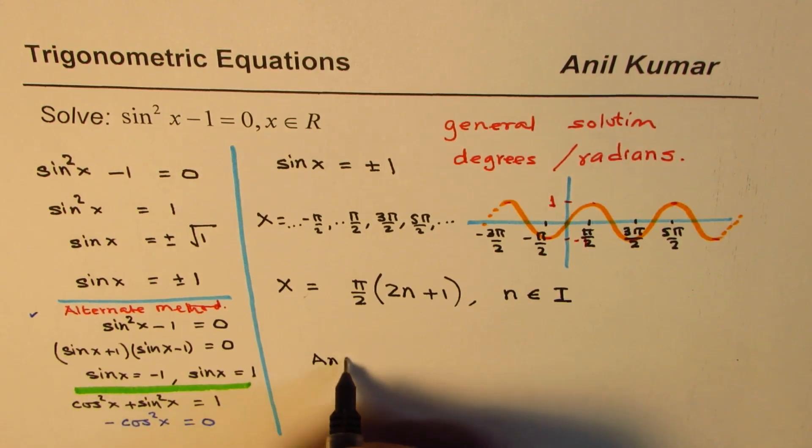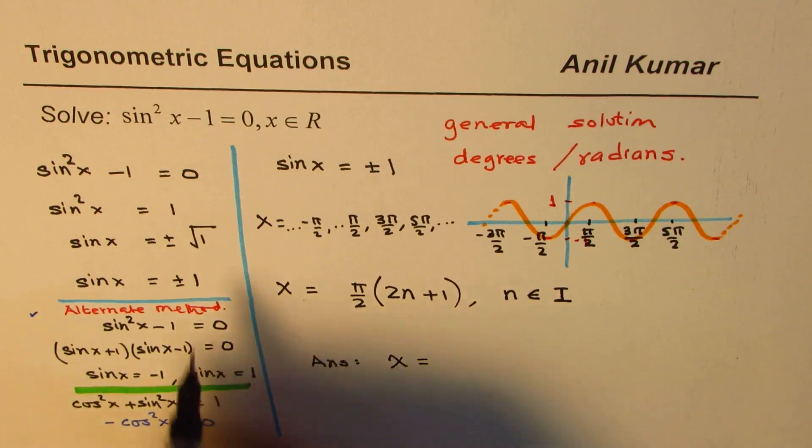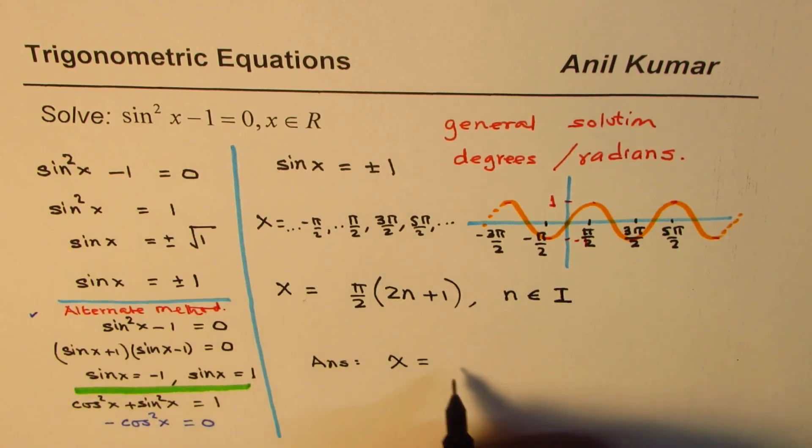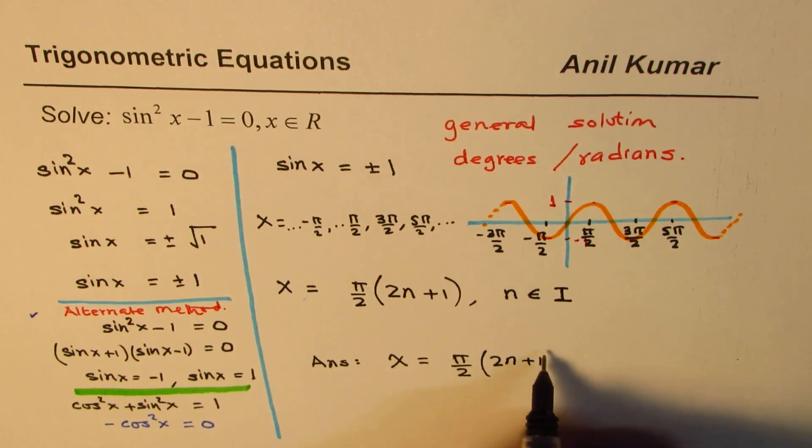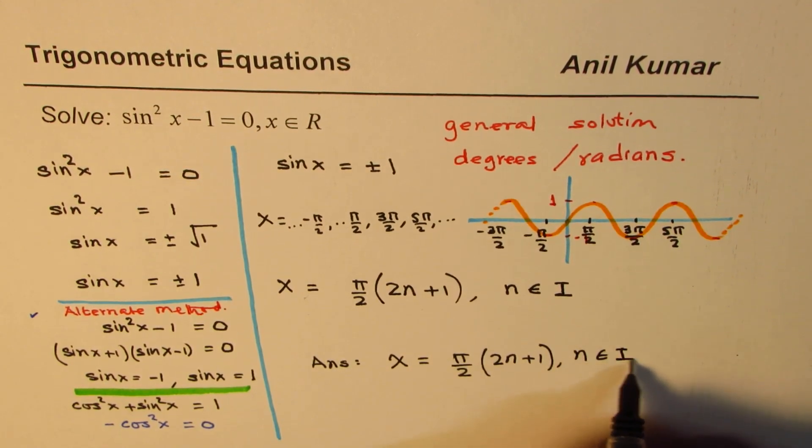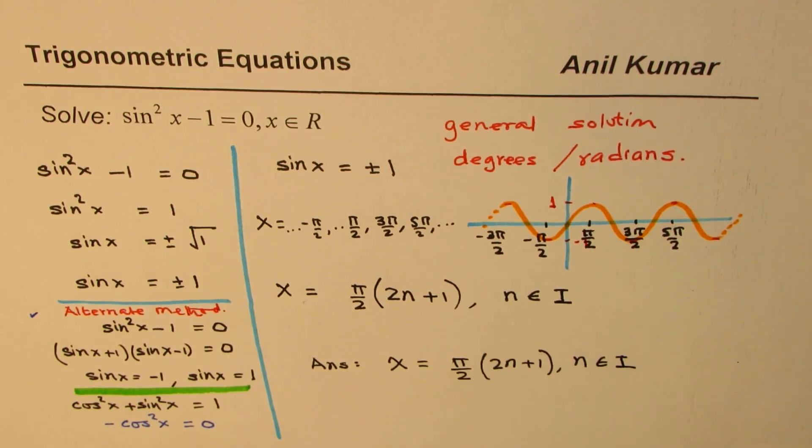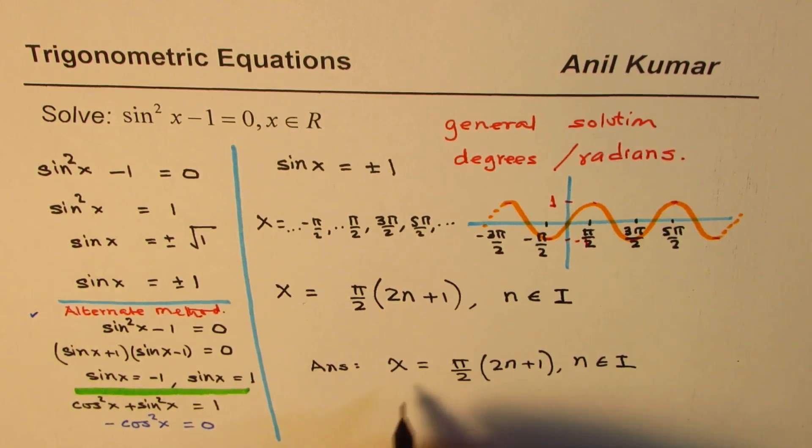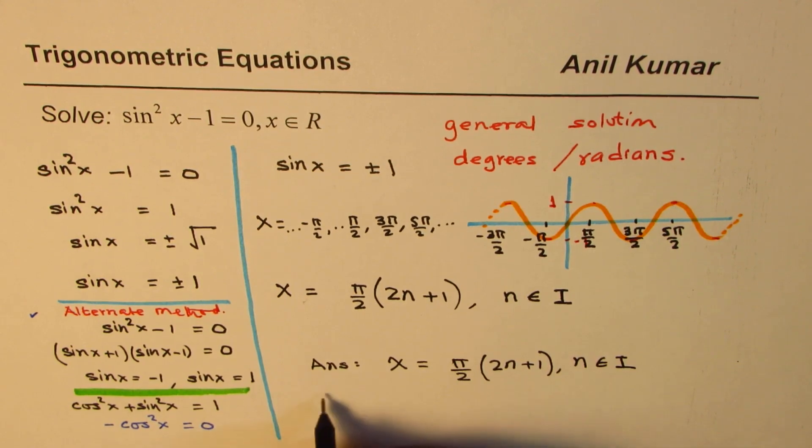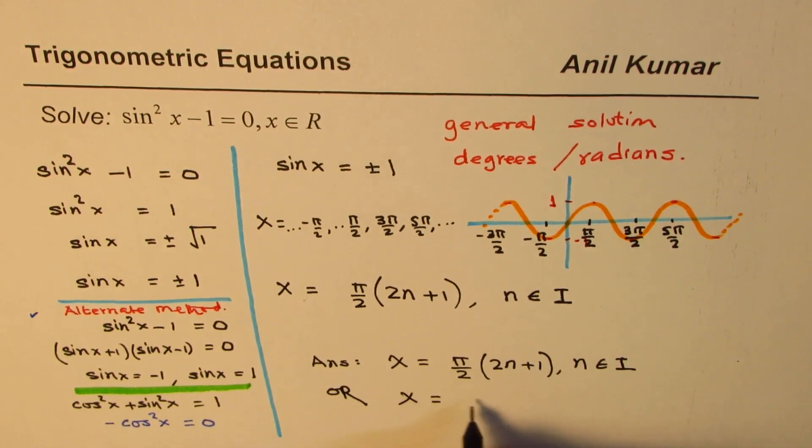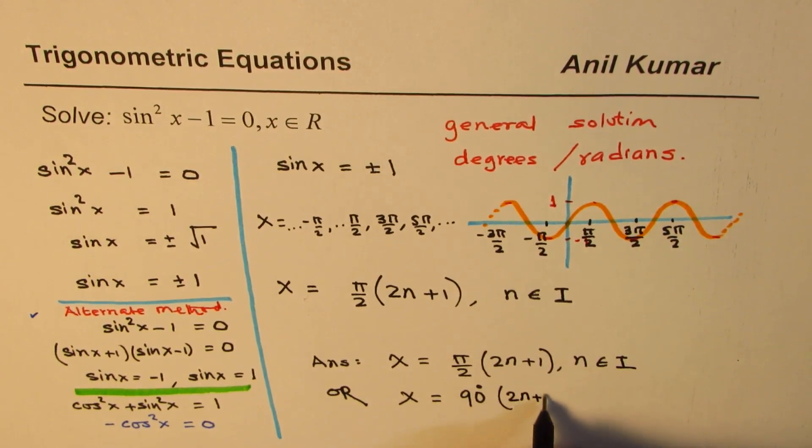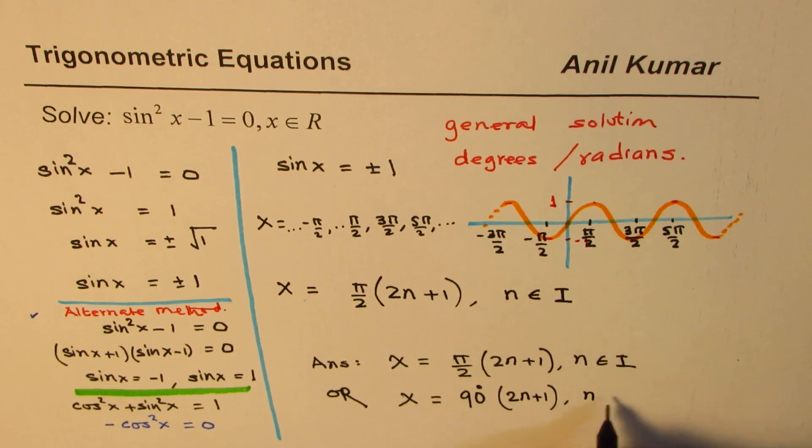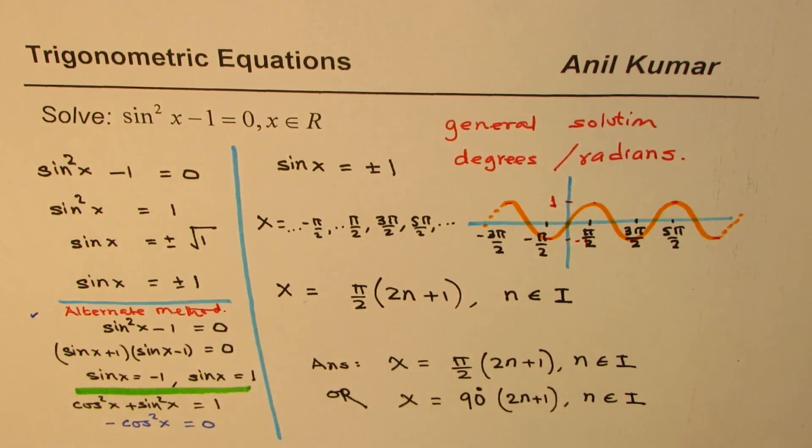And therefore, our answer will be x is equals to pi by 2 times 2n plus 1 where n belongs to integers. So, this is the answer given in radians. Or, you could also write this as x equals to 90 degrees times 2n plus 1 where n belongs to integers. So, that is how you could actually write solution of this equation.